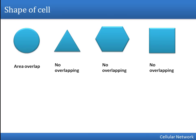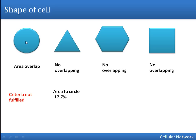All three remaining shapes — triangle, hexagon, and square — are geometric shapes, so the second criteria is fulfilled. Now comparing area: the circle provides maximum coverage but was already rejected due to overlapping. Comparing the three remaining shapes against the circle: a triangle can cover about 60% of the area of a circle, a hexagon can cover 83%, and a square can cover 63%. So the hexagonal shape covers the maximum area among the valid options, which is why it is selected to represent a cell.